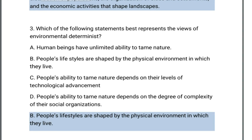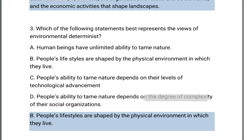Which of the following statements best represents the views of environmental determinists? A. Human beings have unlimited ability to tame nature. B. People's lifestyles are shaped by the physical environment in which they live. C. People's ability to tame nature depends on their levels of technological advancement. D. People's ability to tame nature depends on the degree of complexity of their social organization.